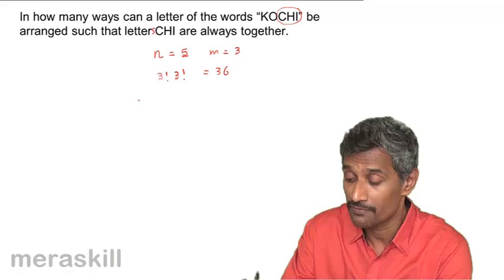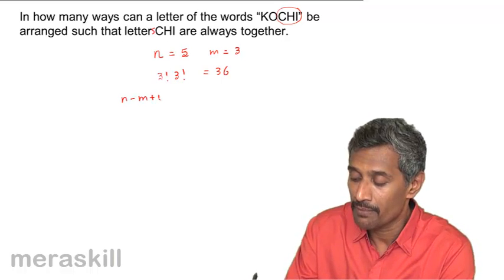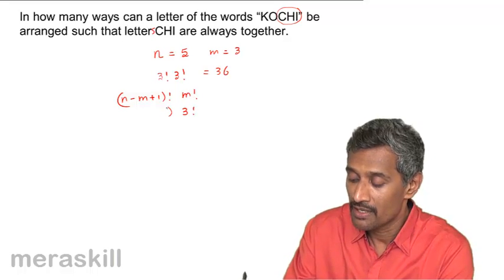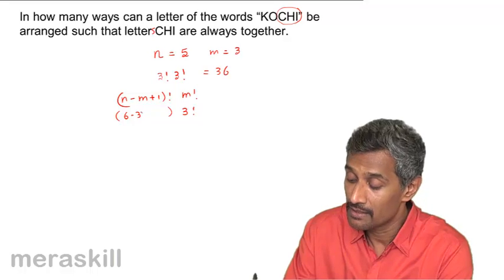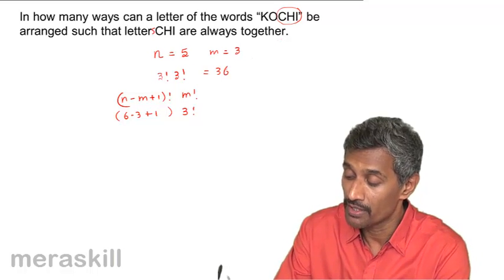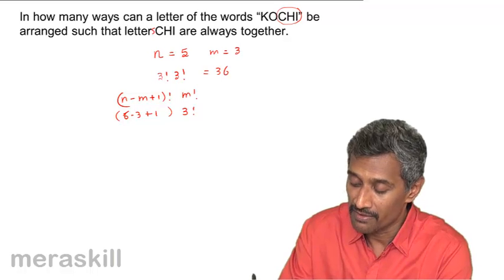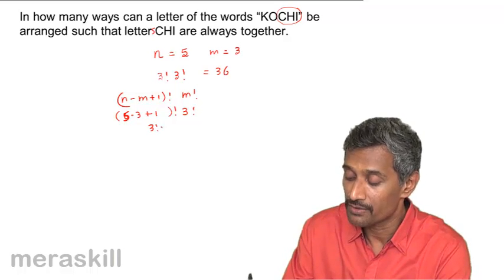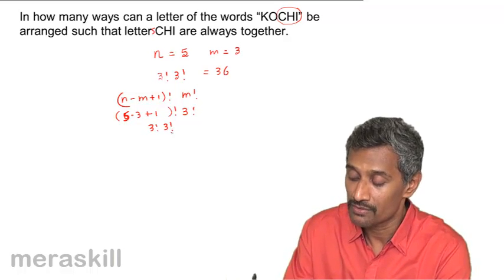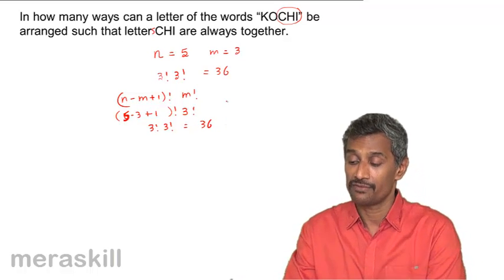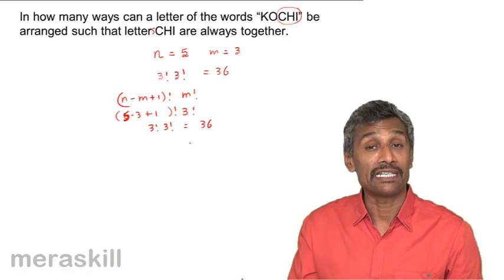So it's going to be three factorial into three factorial, which is six into six equals 36 ways. Using the formula: n minus m plus one factorial into m factorial. Here n is five and m is three, so it's five minus three plus one factorial, which is three factorial, into three factorial — which again gives 36. I made a mistake earlier where n should have been five, not six. So we have 36 such arrangements possible where C, H, I are always together.